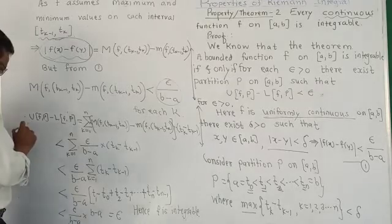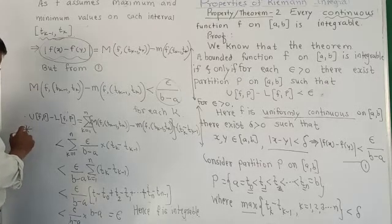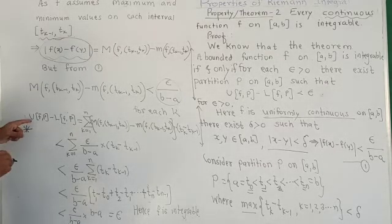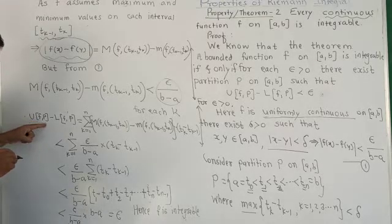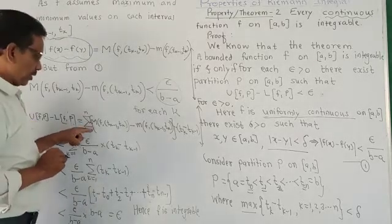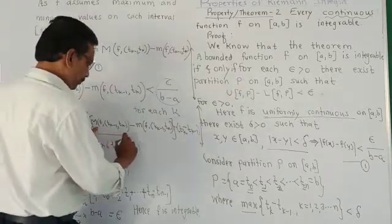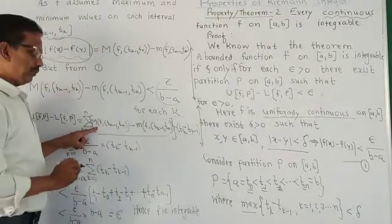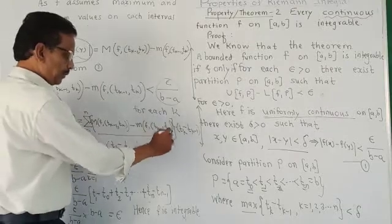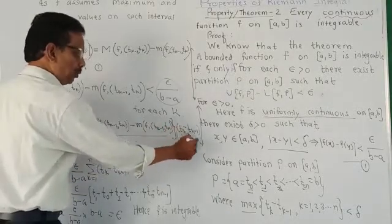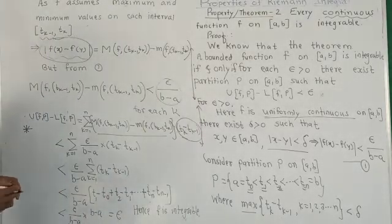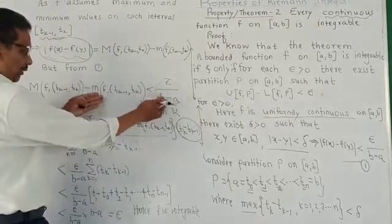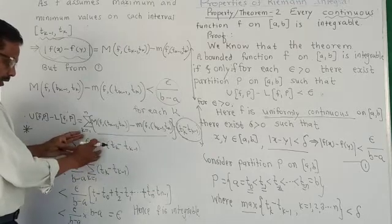we consider this expression. Now, we consider this expression. This is important. We know that this statement: U(F,P) minus L(F,P) is a summation of M_F(tk-1, tk) minus m_F(tk-1, tk) into tk minus tk-1. Then, put for this value epsilon/(b - a). This is constant. We put it outside.